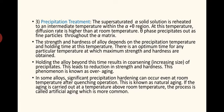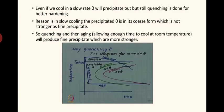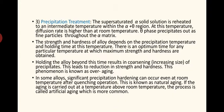The second step is quenching, and the final step is precipitation treatment. The supersaturated alpha solid solution is reheated to an intermediate temperature within the alpha plus theta region. This is not always mandatory, but to impart more strength we mostly heat this solution. The final solution obtained after quenching to room temperature is further reheated, but it must be kept within the alpha plus theta region — we must not heat above that temperature.